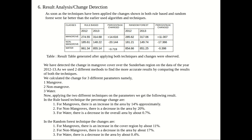We used two different methods to find more accurate results by comparing the results of both techniques. The change was measured for three different parameters: mangrove, non-mangrove, and water. In the rule-based technique, there is an increase in mangrove area of approximately 14%, a decrease in non-mangrove area of 20%, and a decrease in water of 0.7%. In the random forest technique, non-mangrove shows a decrease of 17%, mangrove shows an increase of 14% and 11%, and water shows a decrease of 0.4%.